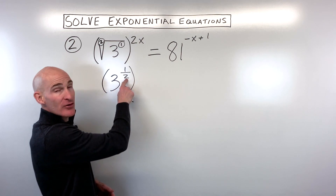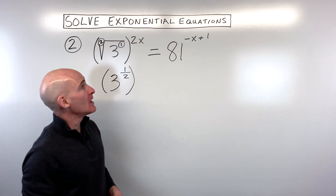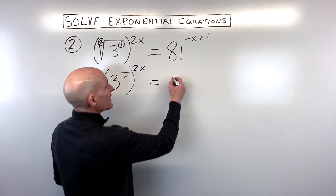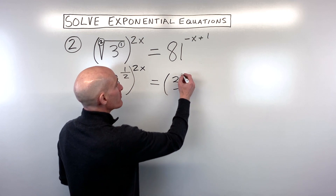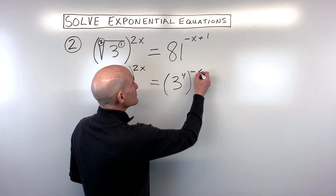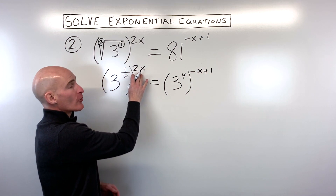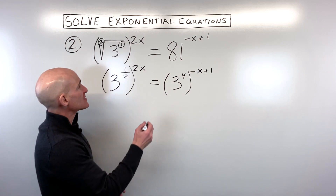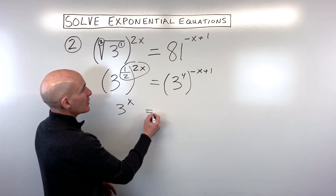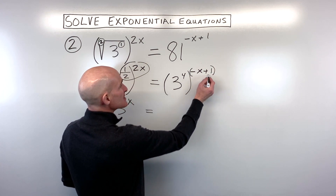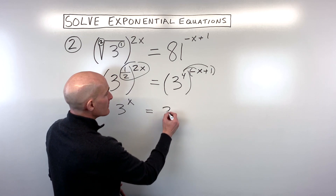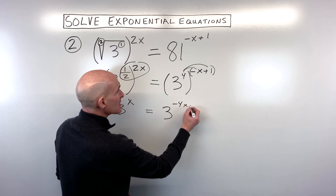If this was the cube root it'd be the one third power; if it was the fourth root it'd be the one fourth power. Keep in mind the two x exponent is still right there. 81 we can think of as three to the fourth power — three times three times three times three equals 81 — and that exponent is still there as well. When you have a power to a power you multiply, so one half times two x gives us x. Over on the other side, because this is a binomial, I'm going to distribute that four to both terms.